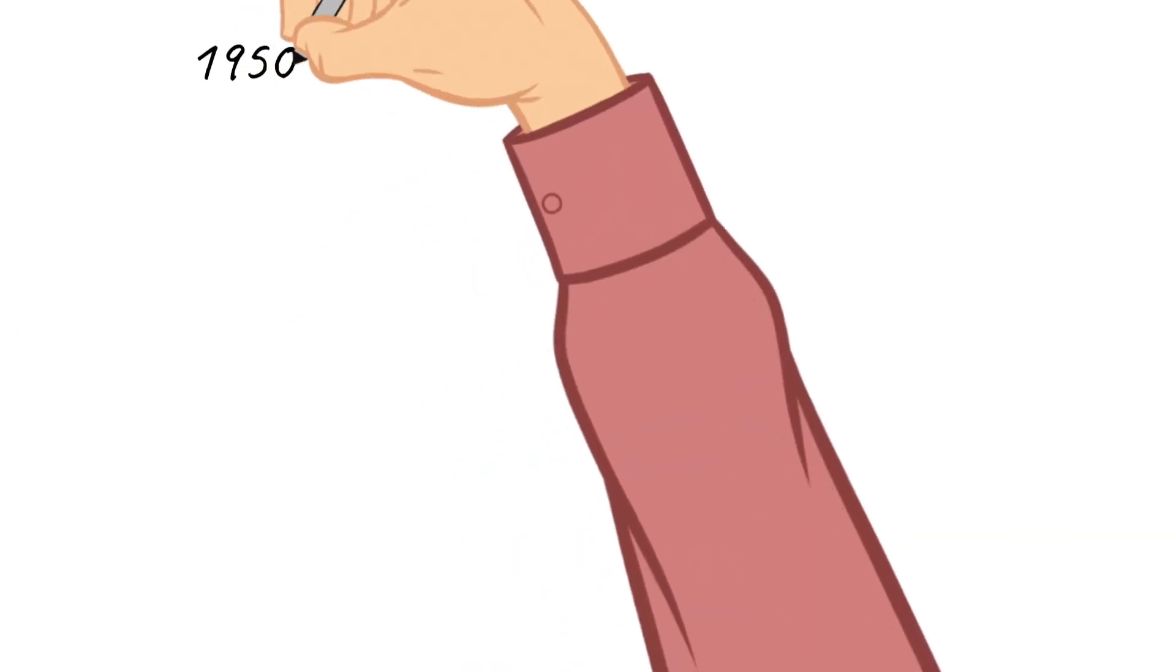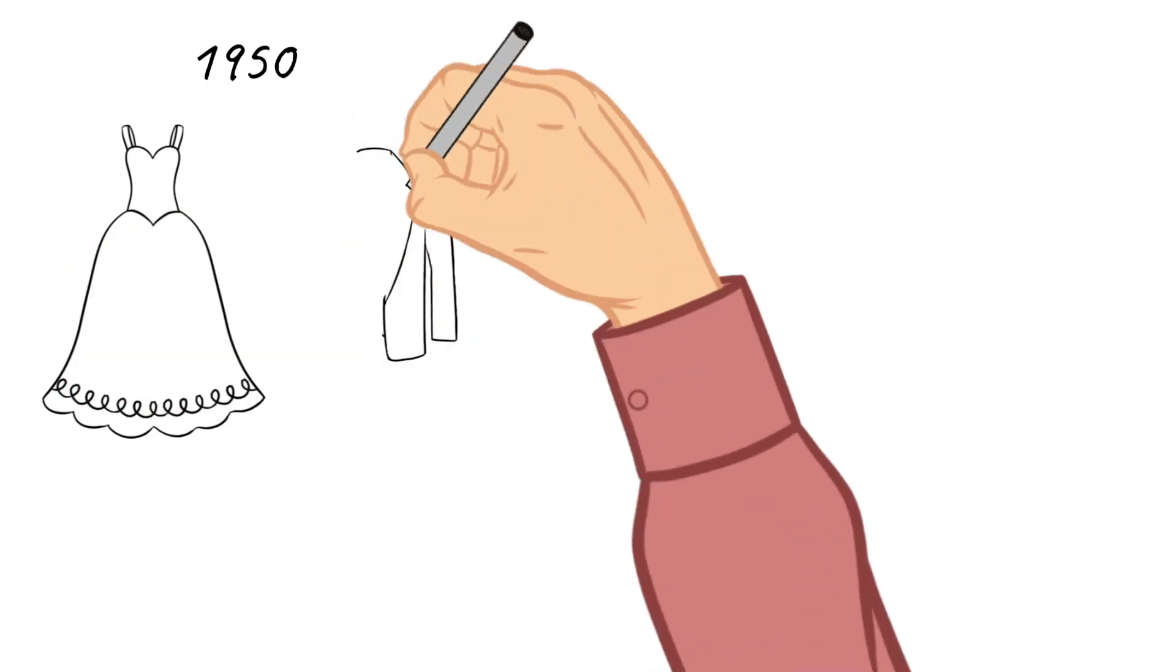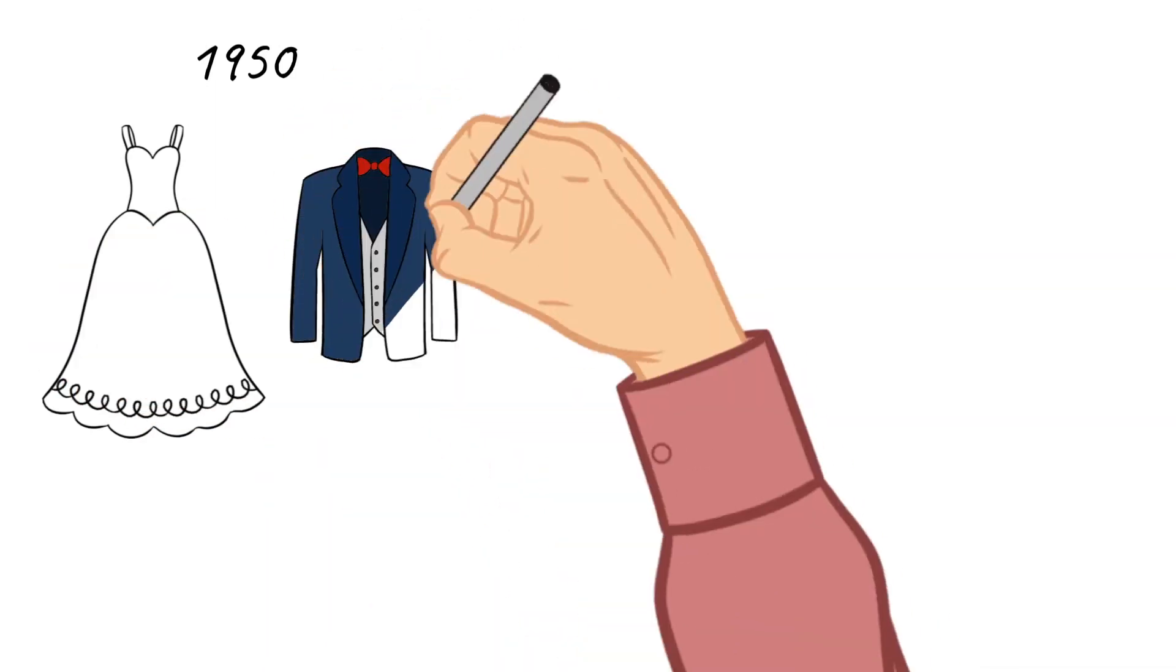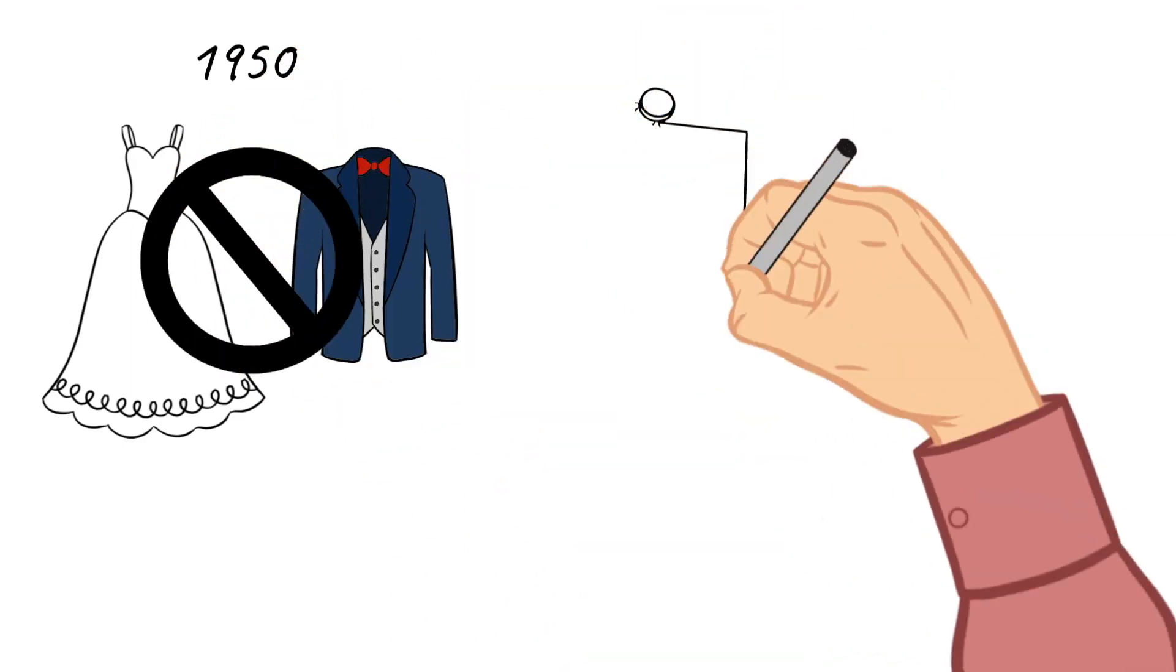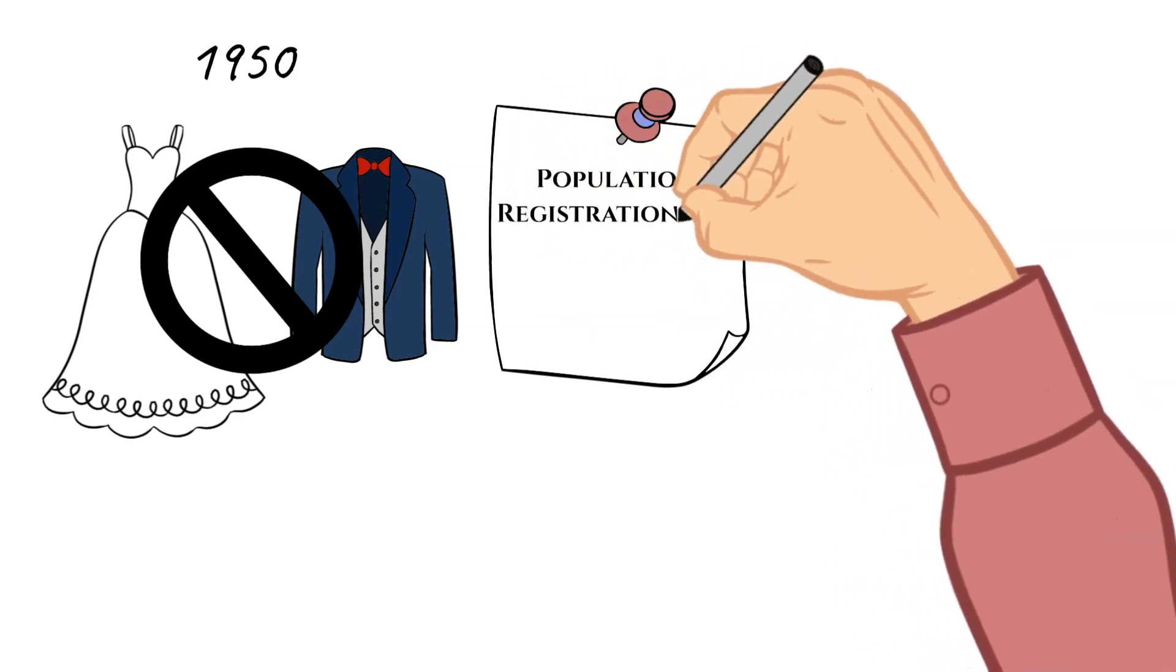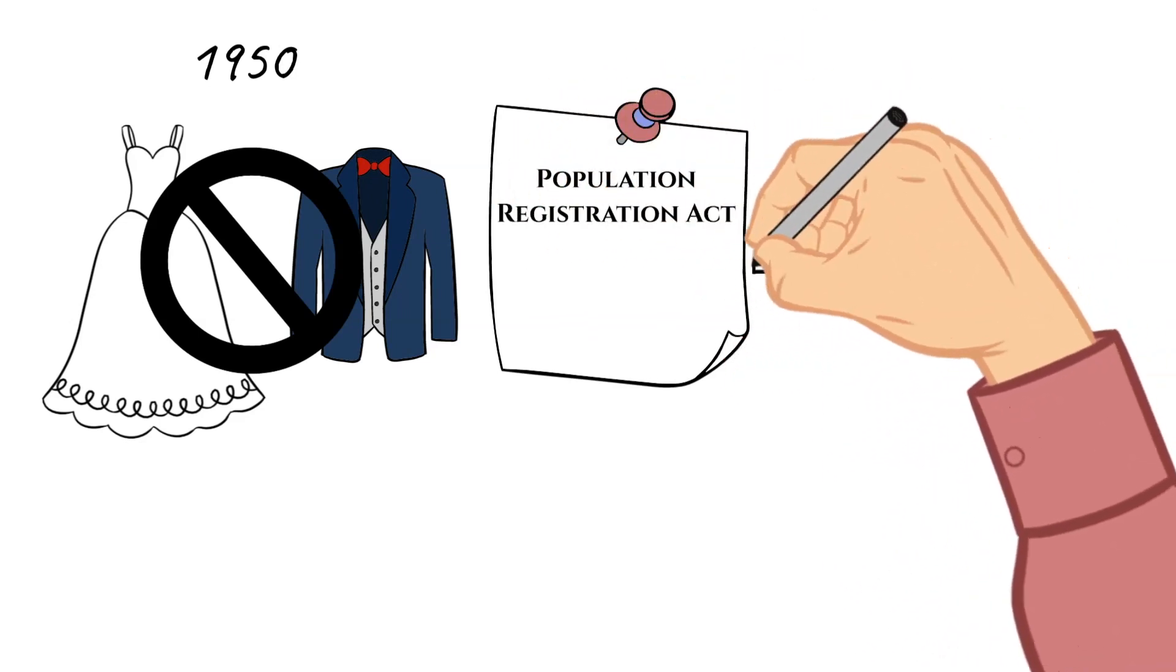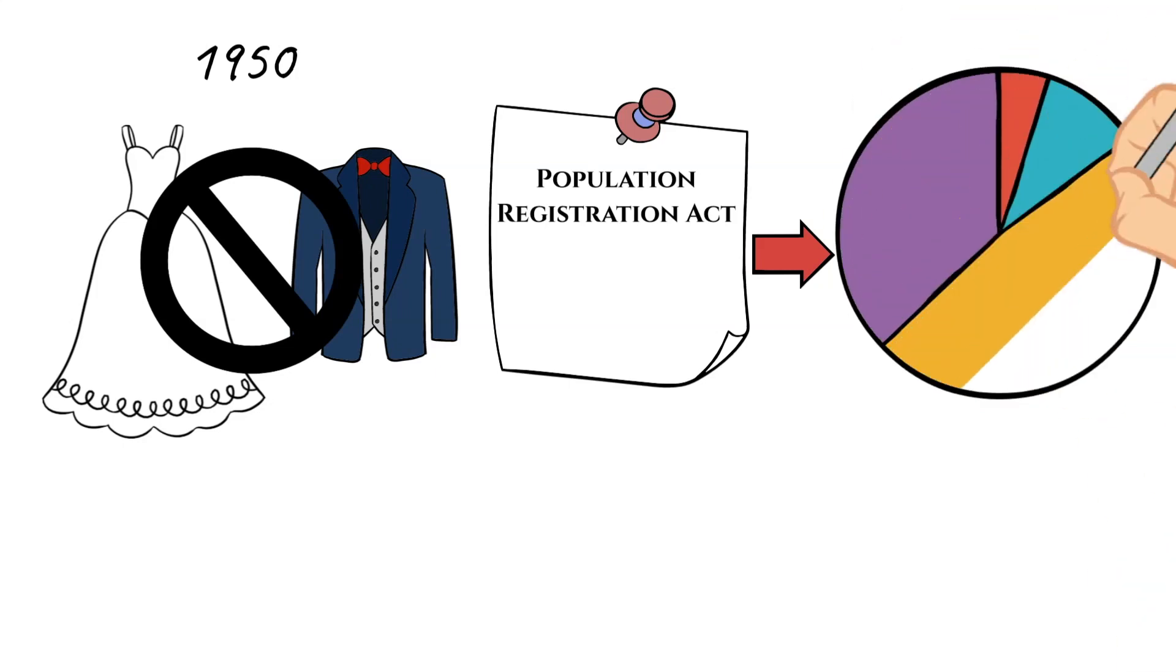By 1950, the government had banned marriages between white people and people of other races. Then the Population Registration Act of 1950 was passed, and this furthered apartheid's strength even farther by classifying all South Africans by race.